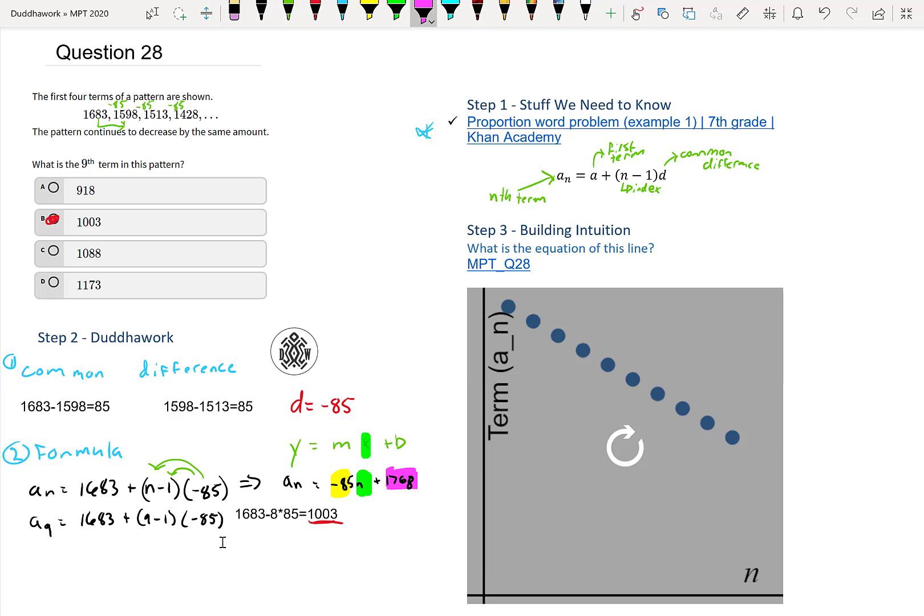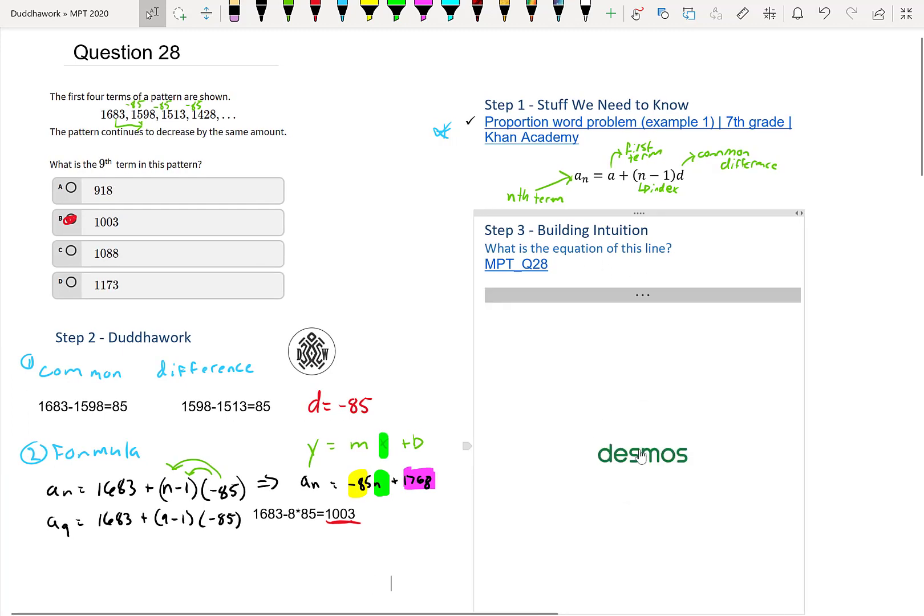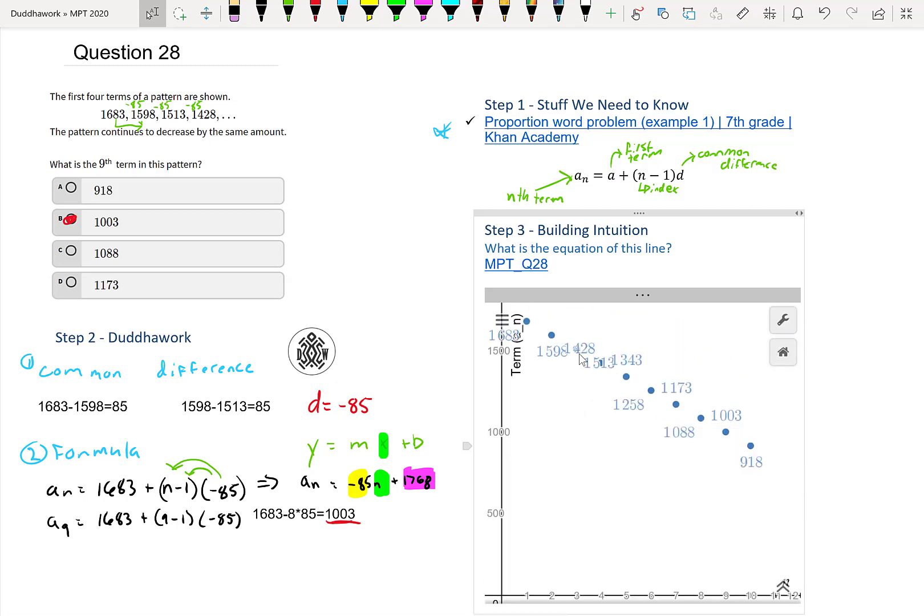We can look at this Desmos. The link will be in the description below. And the question I ask you is, what is the equation of this line? I plotted all the points. Here, it's all the terms as your X axis is just the N. The Y axis is just the value of the term. And it looks like a line. So that makes sense. Well, you could look at it by hand.